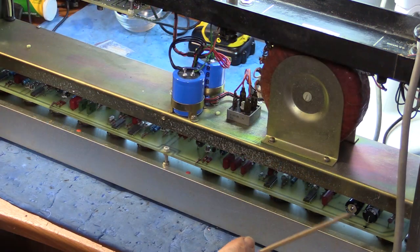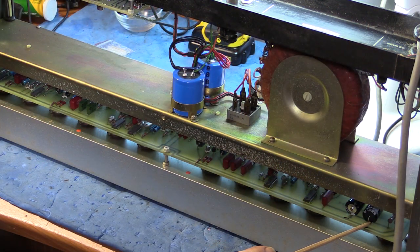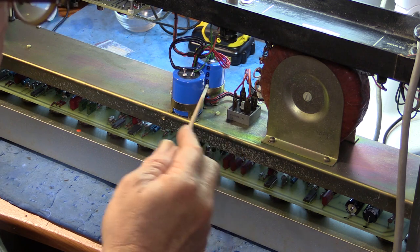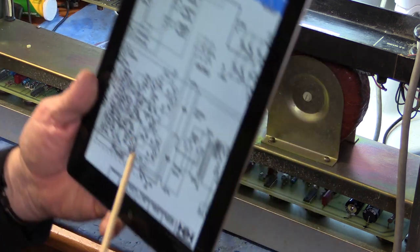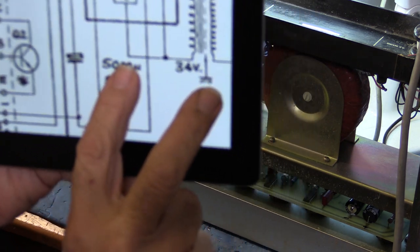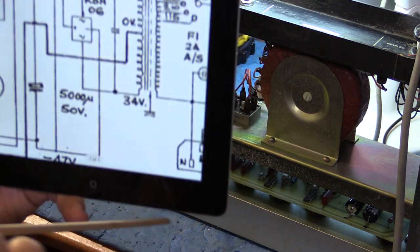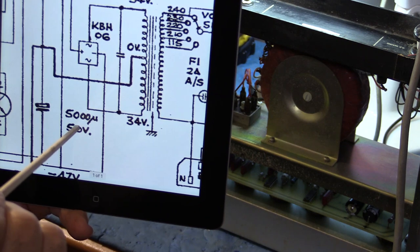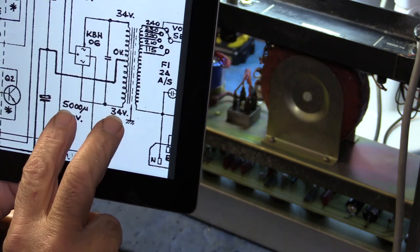So I've replaced those two plus minus 16 volt caps. I replaced these two big filter caps, 4700. You can see them marked as 5000 here. I've put in 4700 at 63 volts.